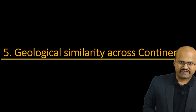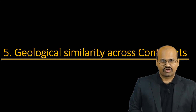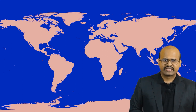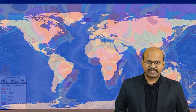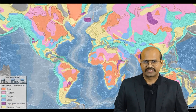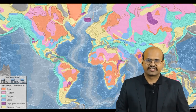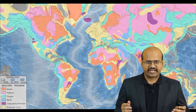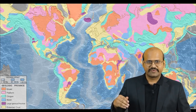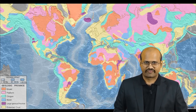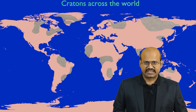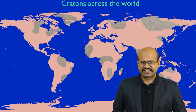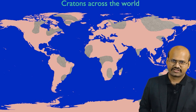The next evidence used by Wegener is geological similarity across continents. When we look at the continents, we feel that all continents are made of one single type of rock. But when we look at the geological division, we can see that each continent is made of different types of rocks. One of these rock types is called Cratons, and these are the oldest rocks found on Earth — they can be as much as 3 to 4 billion years old.